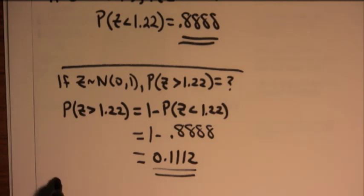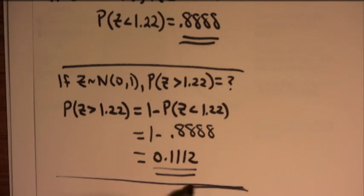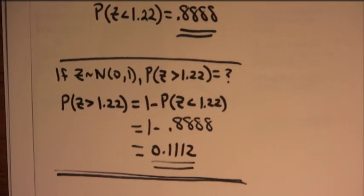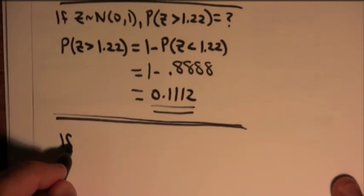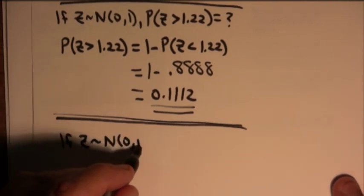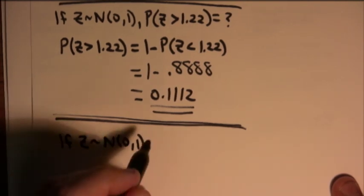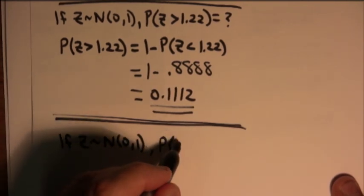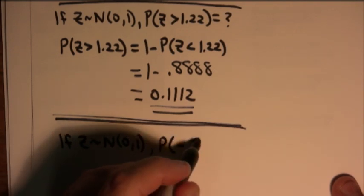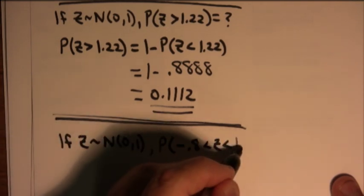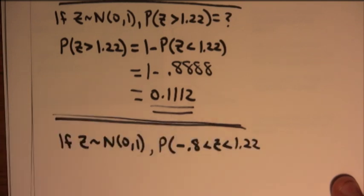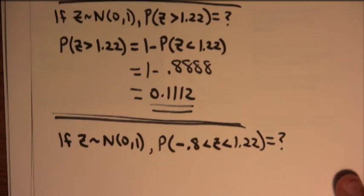Quite often, we're also interested in problems where you're looking for the probability that a random variable is between two things. So, for instance, you might have a standard normal random variable, and you might want to know the probability that z is between, let's say, negative 0.8 and let's just use 1.22 again since we've looked that up before. How do you calculate a probability like that?